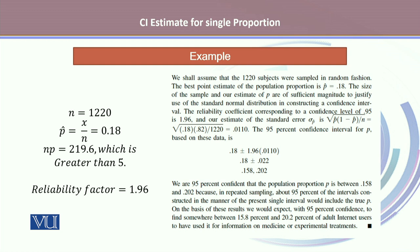Using 1.96 as the reliability factor, and the given information that the sample size n is 1,220 and the sample proportion p-hat equals 0.18, we calculate np, which turns out to be 219.6 — certainly greater than 5. Since this condition holds, we can approximate to the standard normal distribution. Substituting all values into the formula, we get 0.18 plus or minus 1.96 times the standard error of 0.0110.